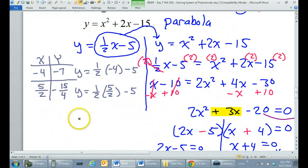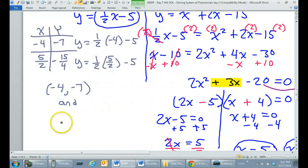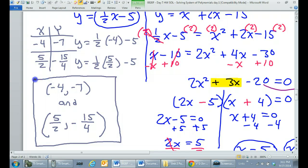So that gives us our 2 solutions, and let's write them as ordered pairs. Negative 4, negative 7, and 5 over 2, comma, negative 15 over 4. Put a box around it. Put a bow on it. So that's our final answer.